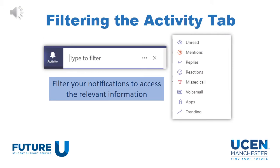As well as using the search bar, you can filter the Activity tab to search for specific notifications. For example, you can search for messages that have been unread, where you've been mentioned, or where people have replied to your posts. This can help you look for the relevant notifications that you want to access.